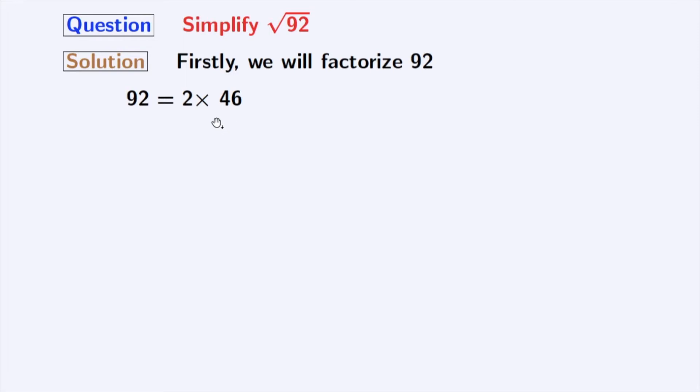Now we will factorize 46. As this is also an even number, we get 46 equal to 2 times 23. Now, look that all these numbers are prime numbers, so we will stop factorizing further.